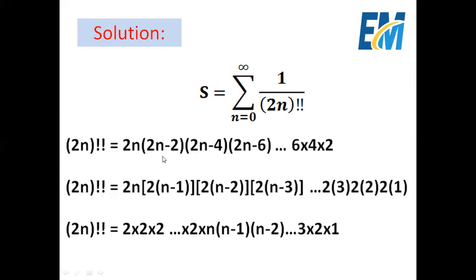Here we have 2n terms, and we take 2 as a common factor from each. So we get 2 × (2n−1), times 2 × (n−2), times 2 × (n−3), and so on: 2 × 3, times 2 × 2, times 2 × 1. Collecting all the factors of 2 — there are n of them — we get 2 multiplied by itself n times, times n × (n−1) × (n−2) × ... × 2 × 1.